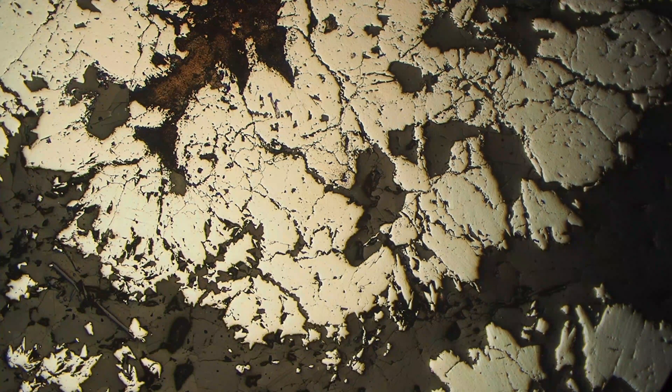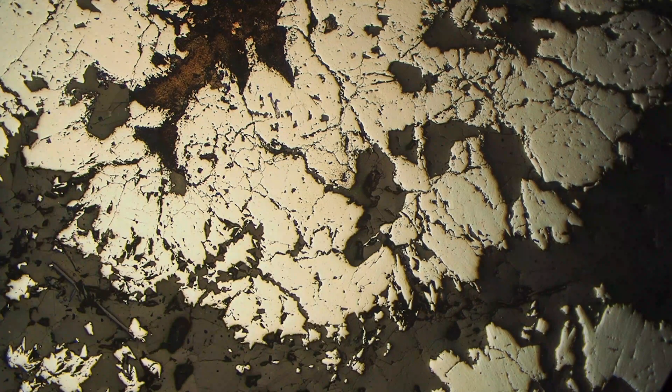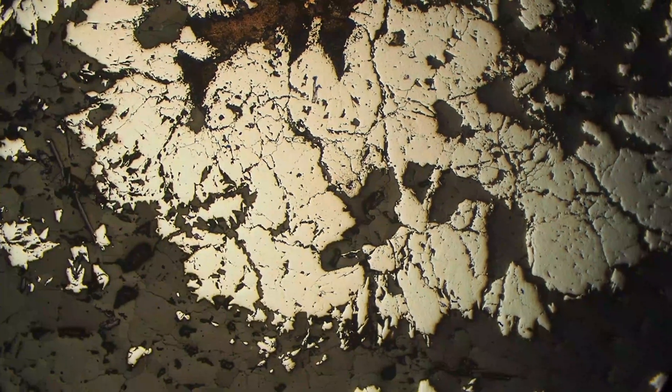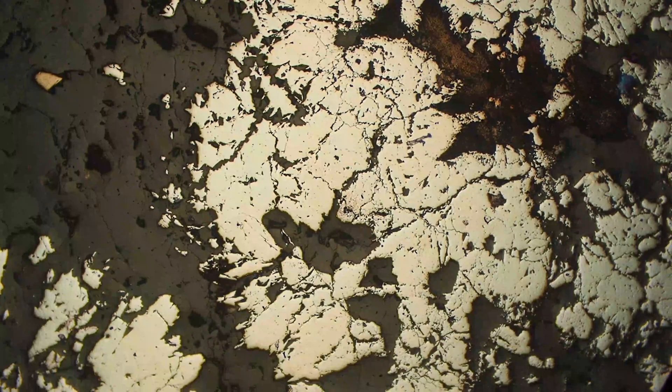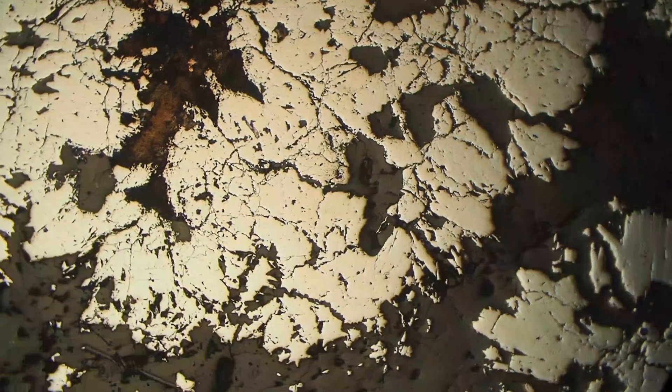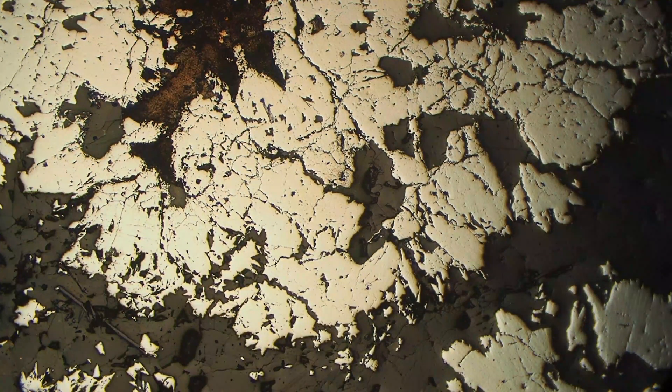You can see here that the arsenopyrite is relatively high relief. This is because it's got a hardness of about five and a half to six, and this means that it's going to be more resistant to polishing. So it looks a little bit sticking out from the other softer material in the background.